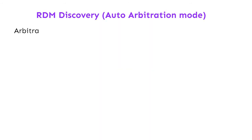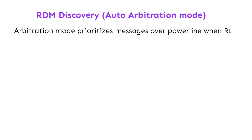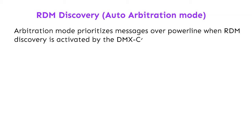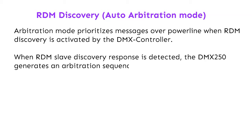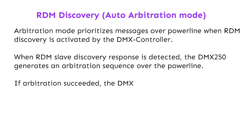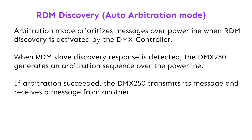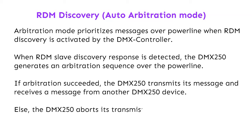RDM Discovery Auto Arbitration Mode prioritizes messages over the power line when RDM discovery is activated by the DMX controller. When an RDM slave discovery response is detected, the DMX-250 generates an arbitration sequence over the power line. If arbitration succeeds, the DMX-250 transmits its message. Otherwise, the DMX-250 aborts its transmission and receives a message from another DMX-250 device.